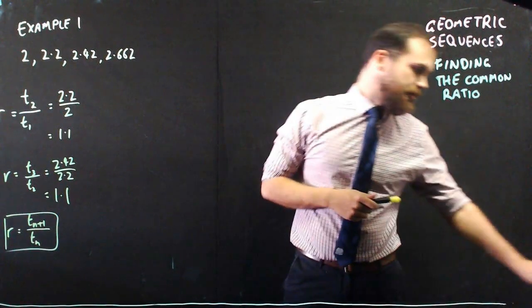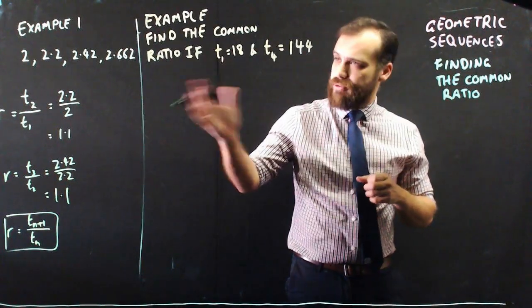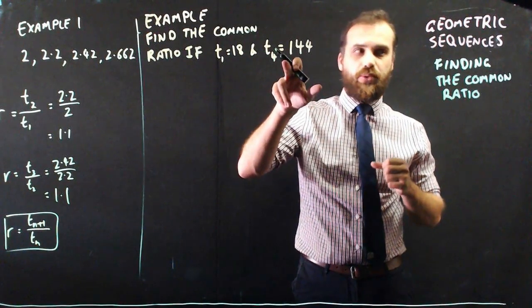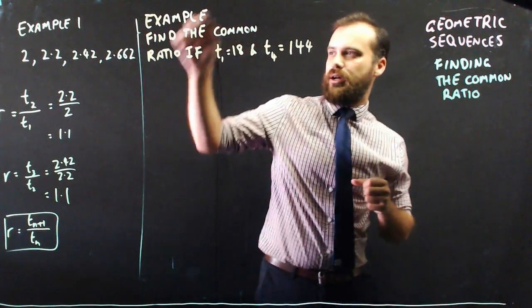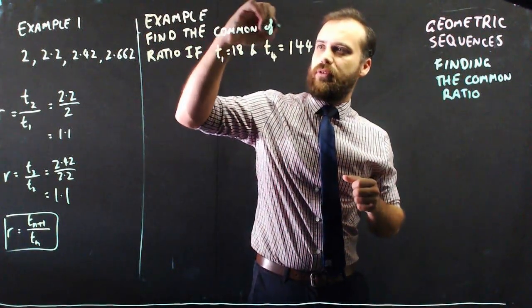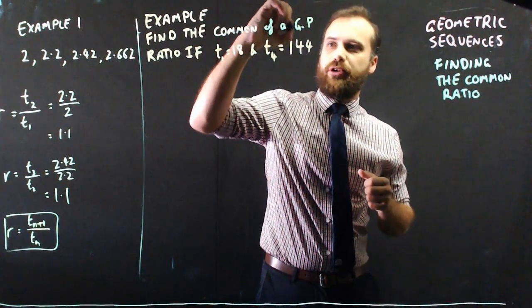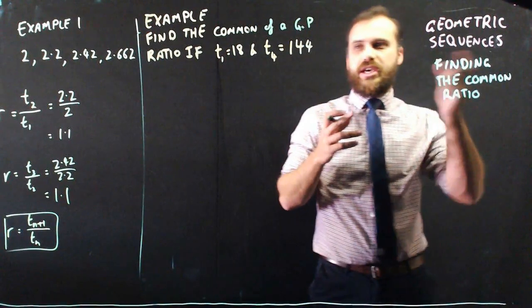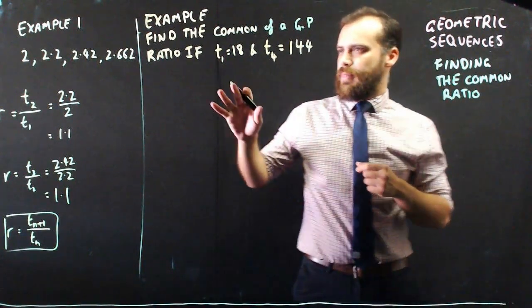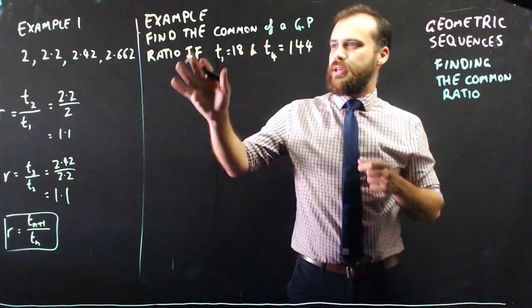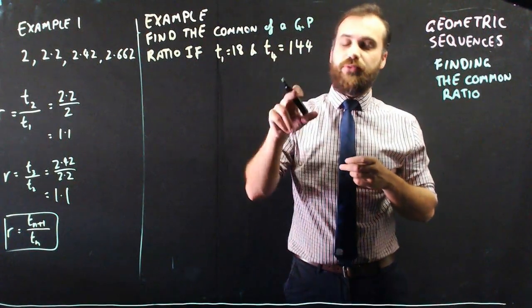But what if you didn't? Okay, so find the common ratio if term 1 is 18 and term 4 equals 144. And I should say, of a geometric, I'll call it a geometric progression, a GP, or a GS, but a GP is usually what we say. Okay, find the common ratio of a GP if term 1 equals 18 and term 4 equals 144.